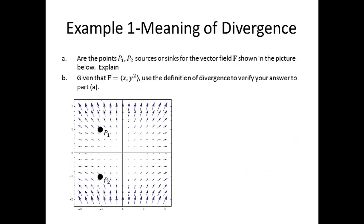For this first example, part A asks are the points p1 and p2 sources or sinks for the vector field f shown in the picture below, and explain.